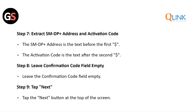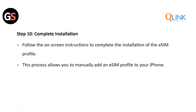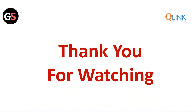Step 9: Tap the Next button at the top of the screen. Step 10: Follow the on-screen instructions to complete the installation of the eSIM profile. This process allows you to manually add an eSIM profile to your iPhone. Thank you for watching — please like this video and subscribe to our channel.